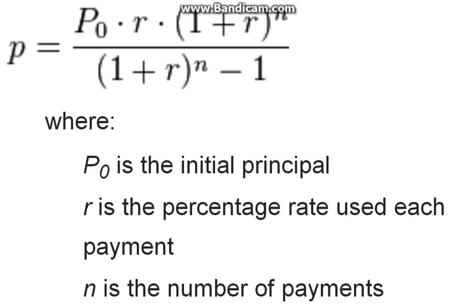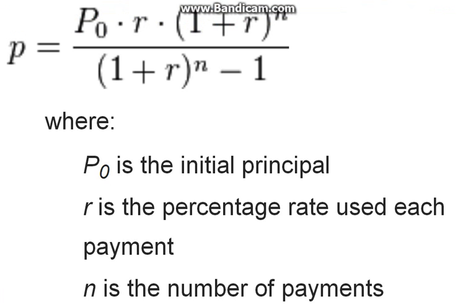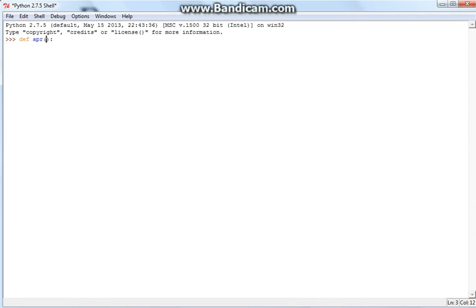To get started, we should set three variables: one variable for the top of the division, one for the bottom of the division, and then one for our final answer, P. So let's start off by defining our function, APR. And because we're going to need three inputs — P sub 0, R, and n — we're going to be using x, y, and z.